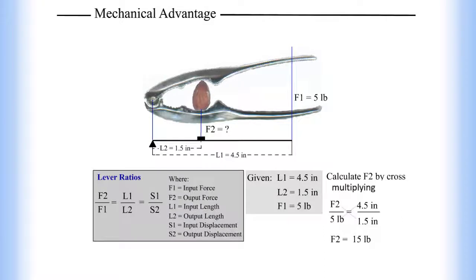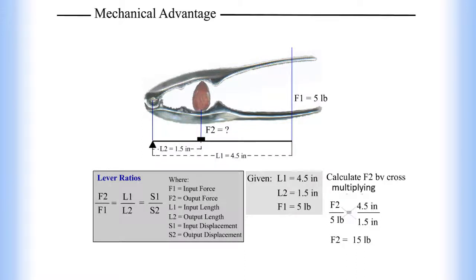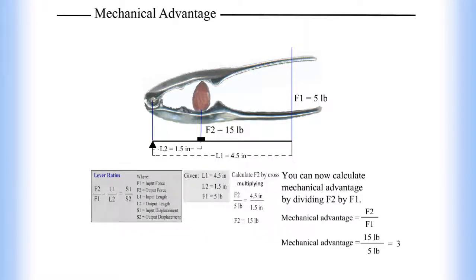Given L1 equals 4.5 inches, L2 equals 1.5 inches, and F1 equals 5 pounds, we calculate F2 by cross-multiplying. In this example, F2 equals 15 pounds. You can now calculate mechanical advantage by dividing F2 by F1.